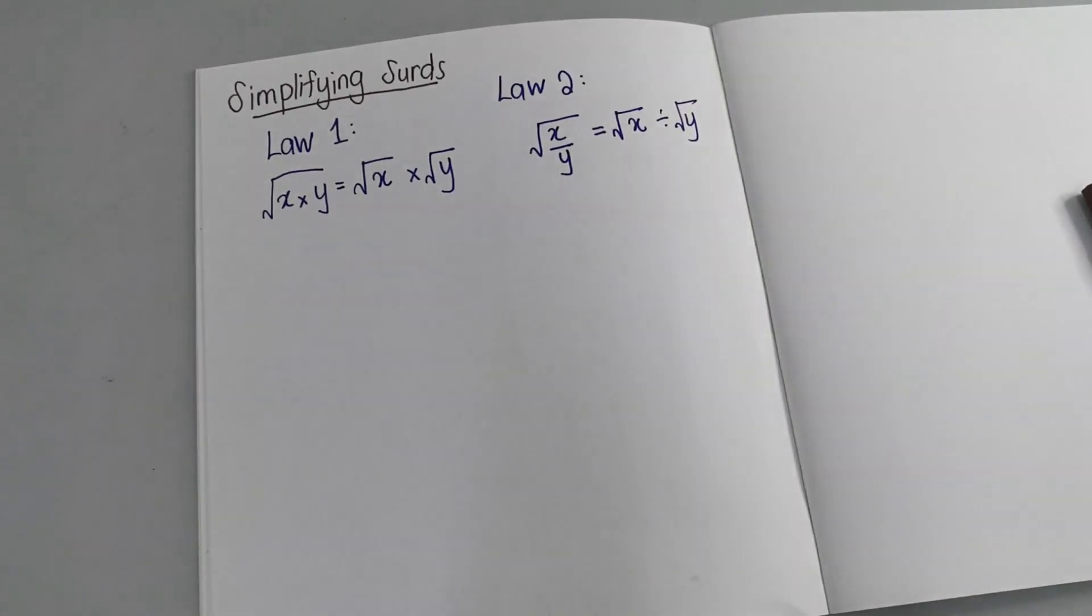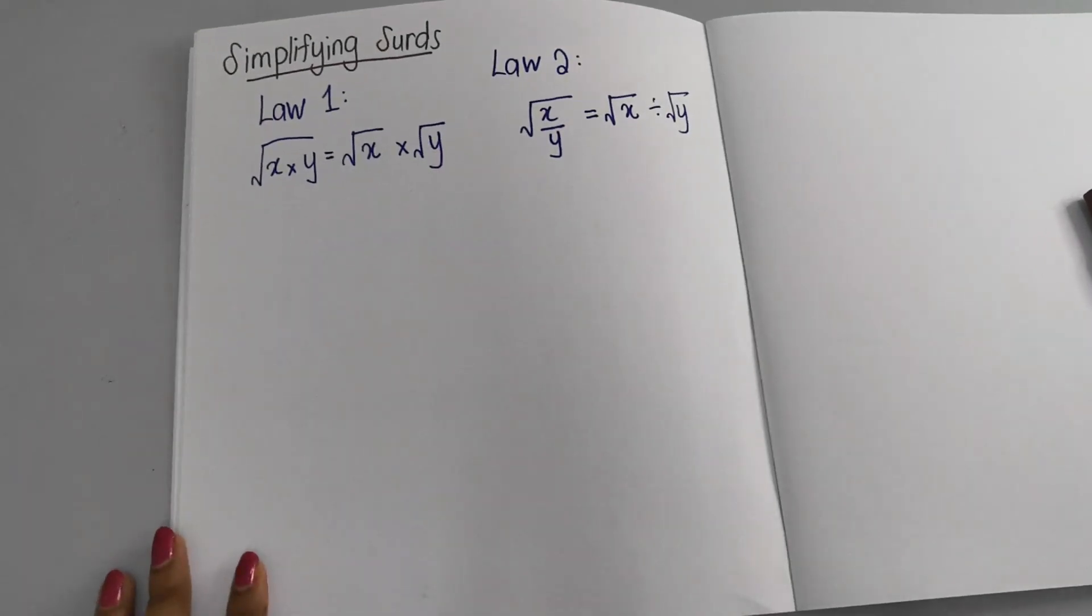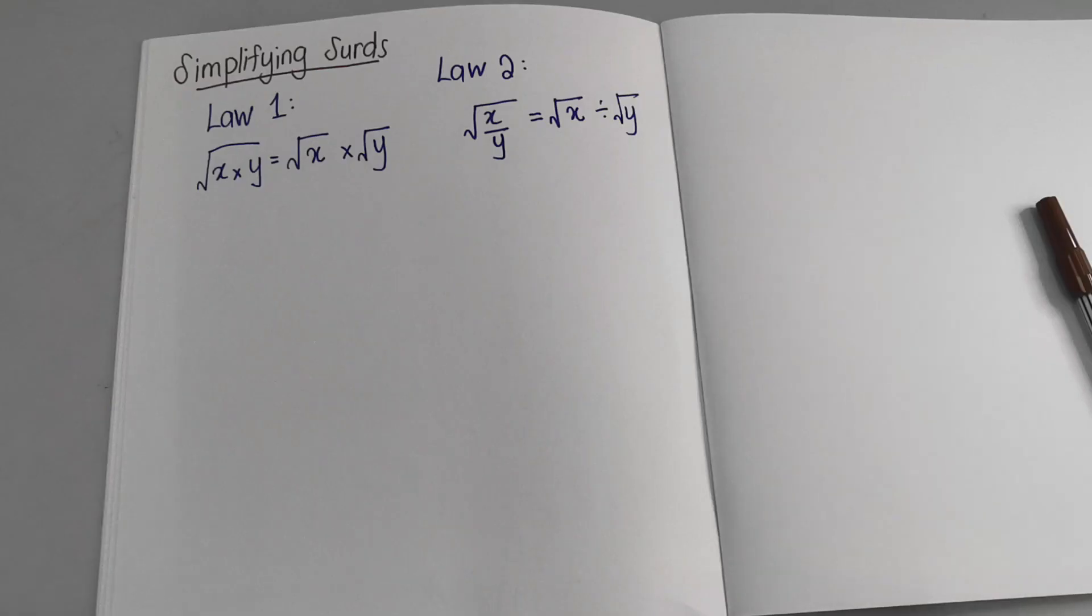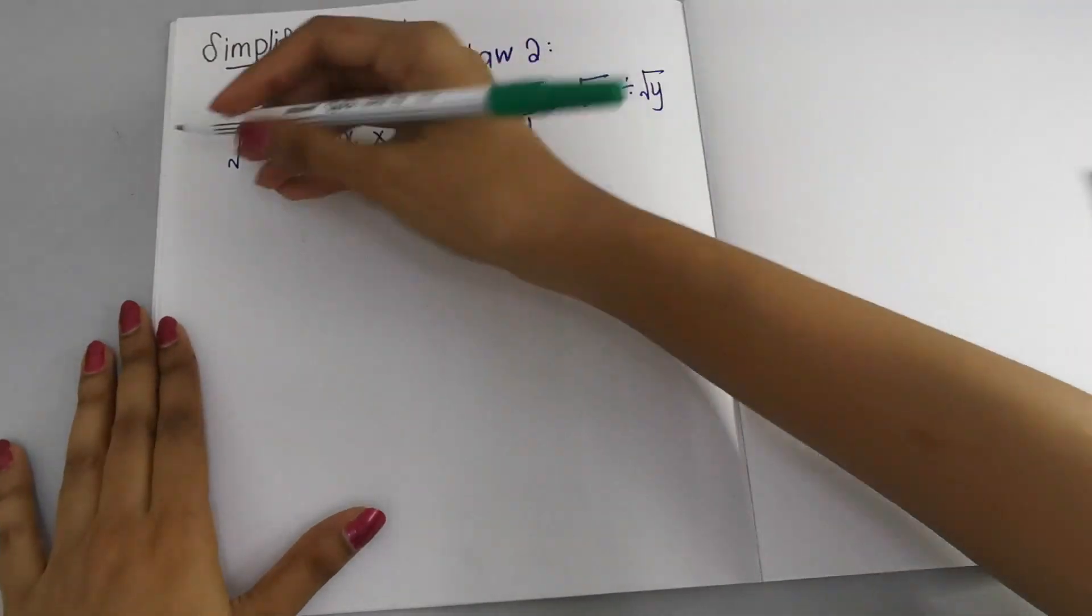So this is the law. The law is simple, it's not complicated. All you need to do is apply this. Now I'm going to give you examples on simplifying surds.